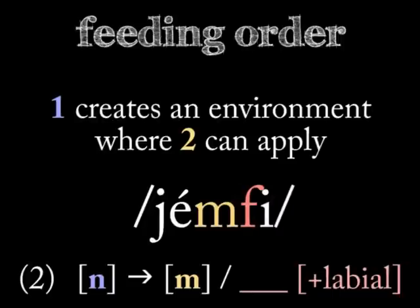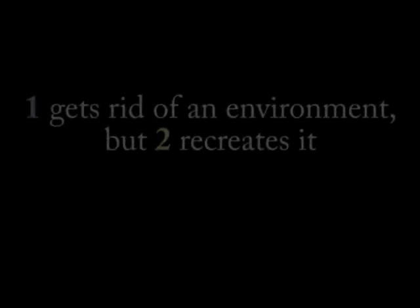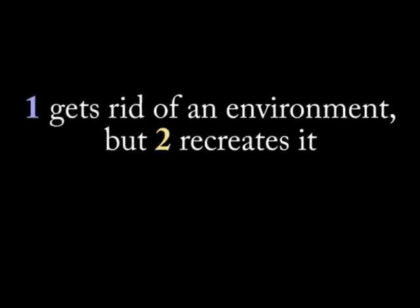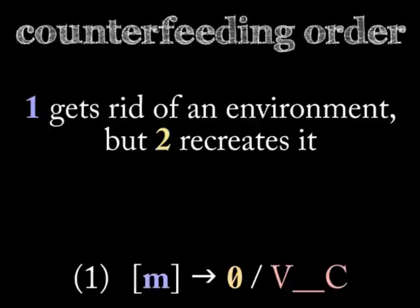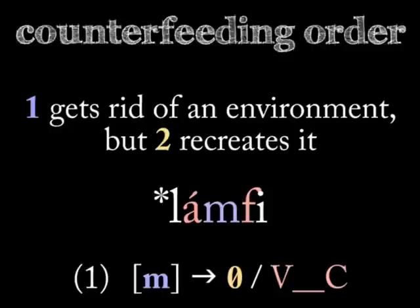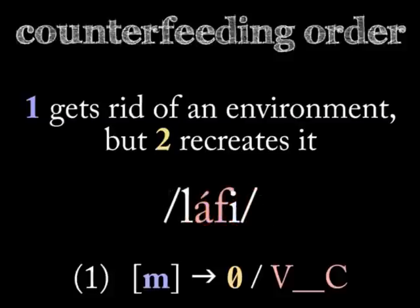When the rules are reversed, the earlier rule abandons an environment which is filled by the later rule — the result is a counterfeeding order. Let's imagine that early in its history, language X had a rule that deleted M before any consonant whatsoever. The parent language had a word LAMFI, but this first rule — M becomes nothing between a vowel and a consonant — applied to that proto-word, giving the output LAFI in language X.